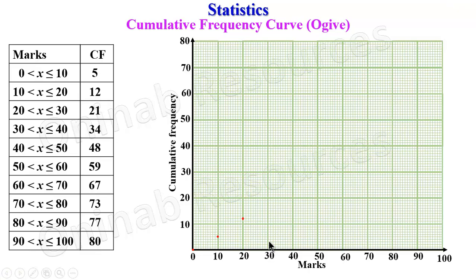For 30, we have it as 21, marked here. For 40, we have it as 34. This is 30, 31, 32, 33, 34. We mark it there. And for 50, we have it as 48. This is 2 lines away from 50, which is at this point.